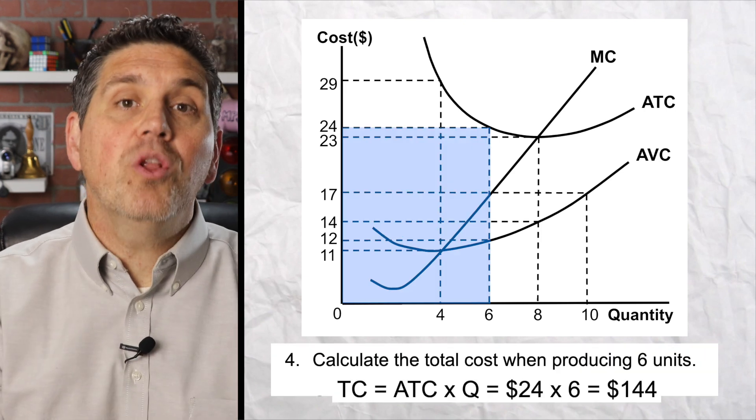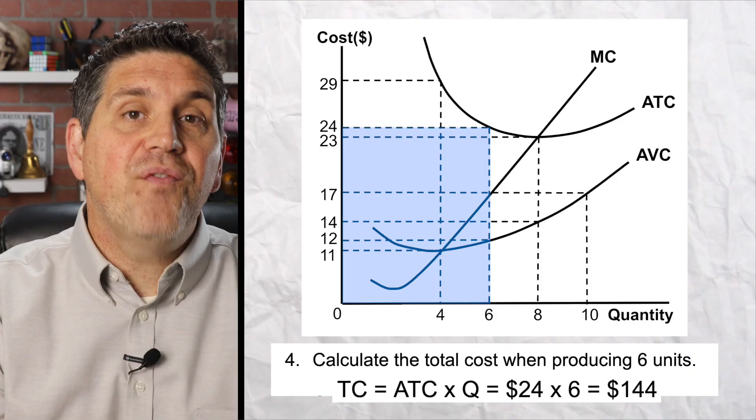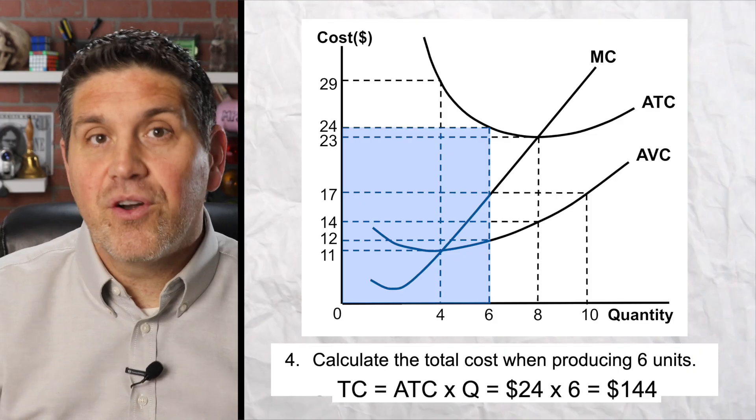And that gives you the answer for question four. The total cost of six units is 24 times six, $144.